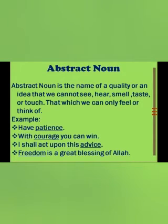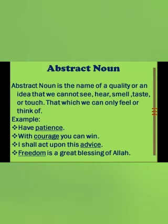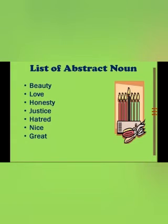The fourth kind is abstract noun, which in Urdu is called ism-e-mujrrat. Abstract noun is the name of a quality or idea that we cannot see, hear, smell, taste, or touch — these are just feelings that we can feel. For example: 'Have patience,' 'With courage you can win,' 'I shall act upon this advice,' and 'Freedom is a great blessing of Allah.' The underlined words in these examples are abstract nouns. Similarly, beauty, love, honesty, justice, hatred are all abstract nouns because we cannot touch, taste, or see them — we can only feel them.